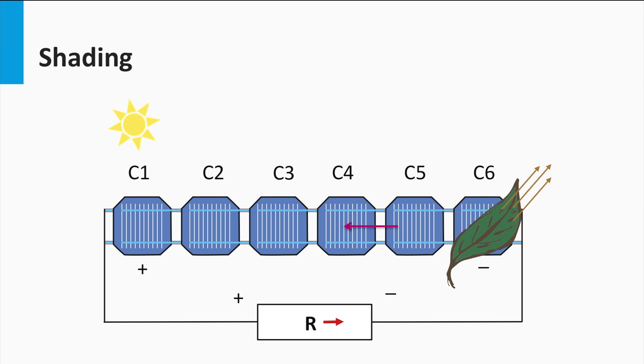This can have significant consequences for the output of the solar module. Let's consider the situation in which one solar cell in the module is for a large part shaded. For simplicity we assume that all six cells, part of this small module, are connected in series. This means that the current generated in the shaded cell is significantly reduced. In a series connection, the current is limited by the cell producing the lowest current. This cell dictates the maximum current flowing through the module.